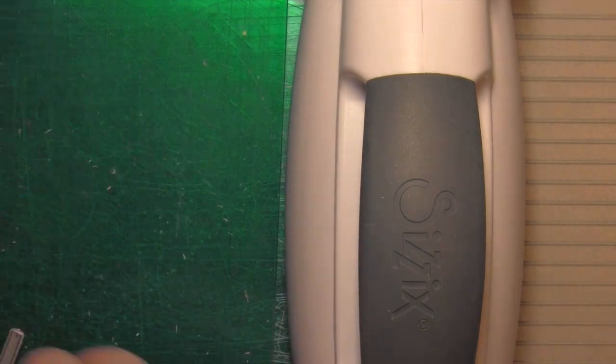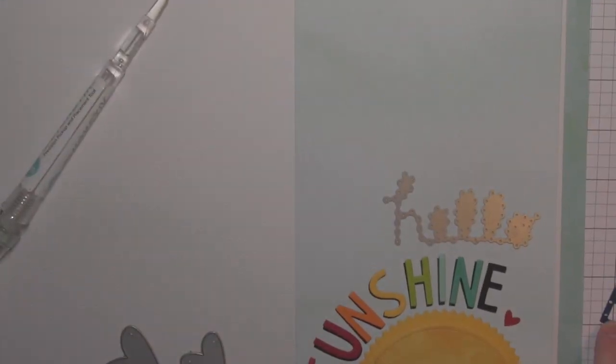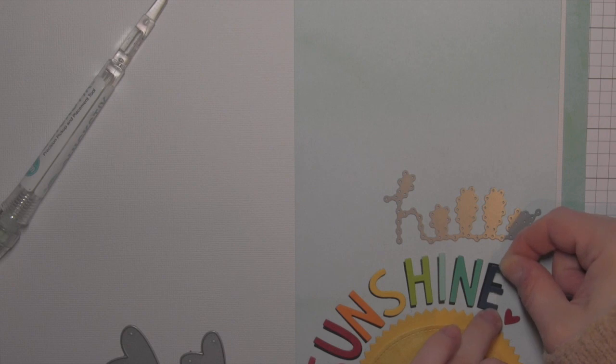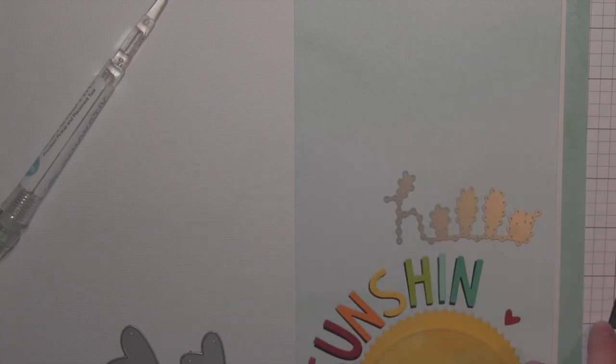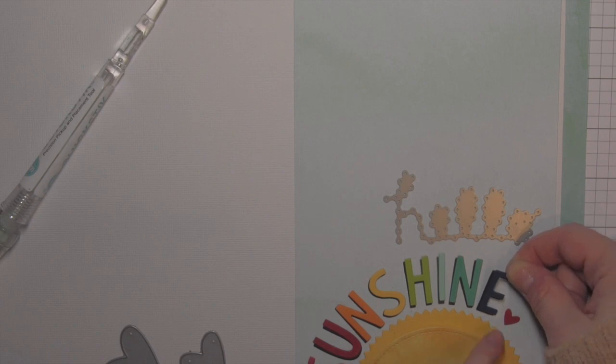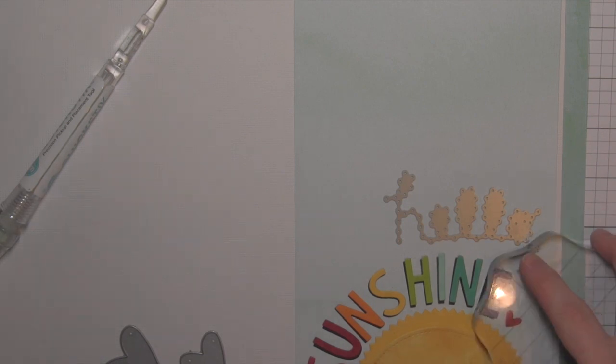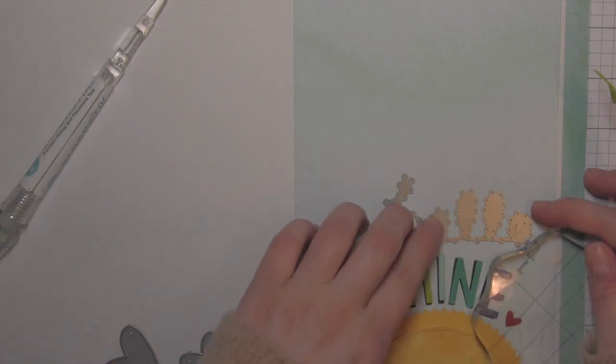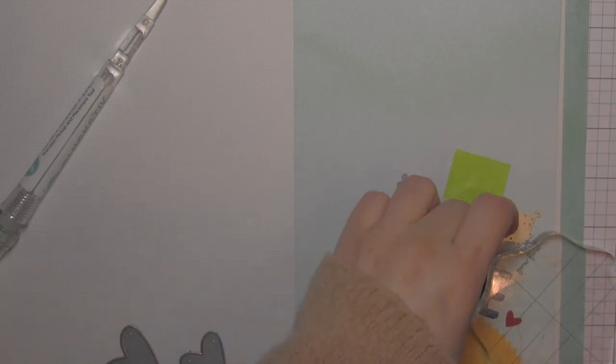From the additional colors of cardstock, I did die cut all of those letters using the Finley's ABCs. I'm adhering the word sunshine around the mocked up sunshine I created from circle dies, layering a colorful letter on top of a black one slightly offset so it has that bit of a shadow.